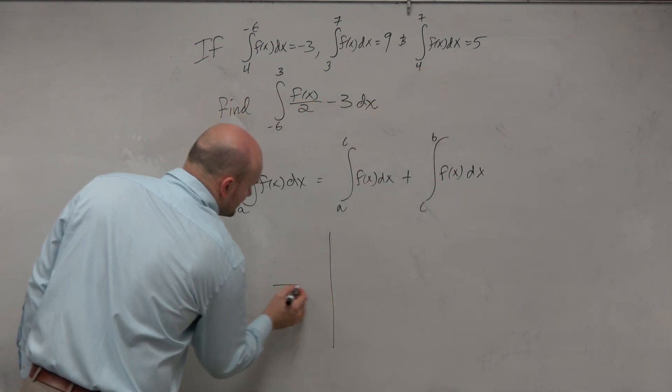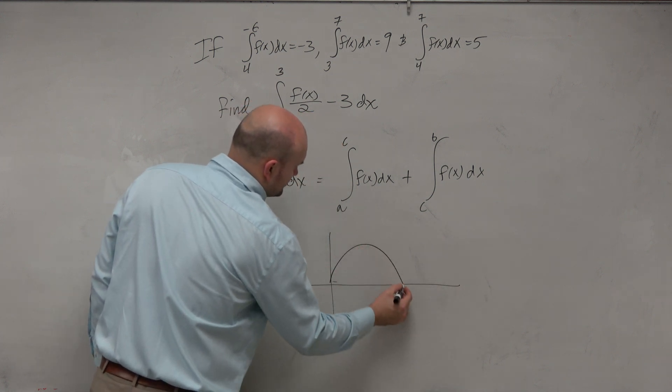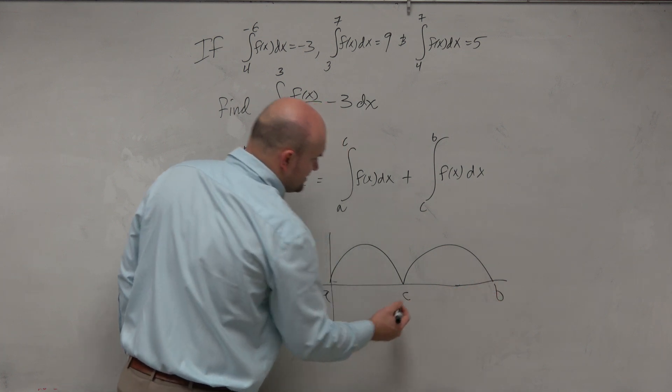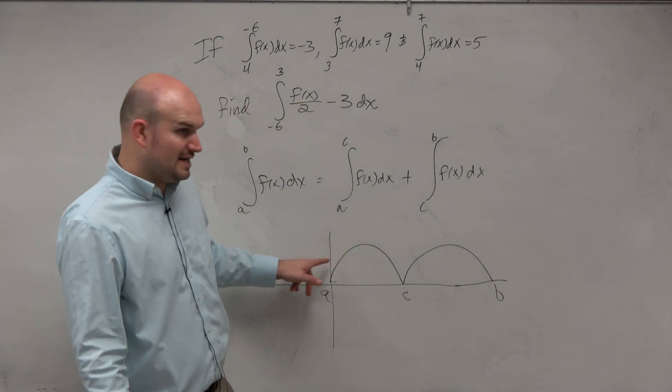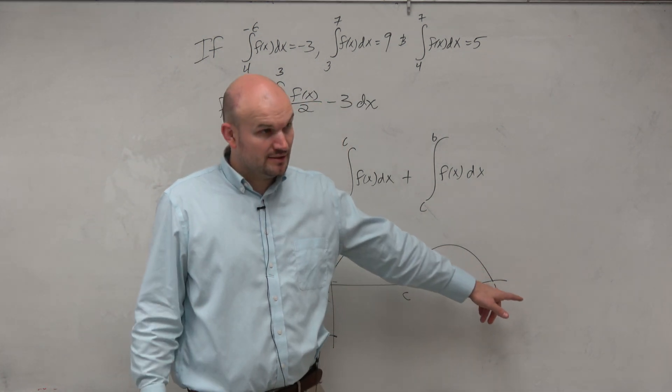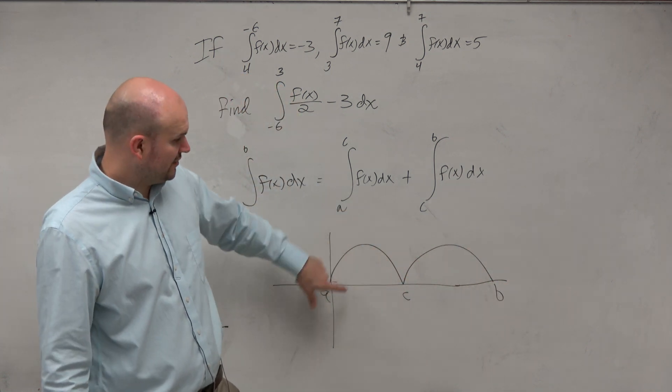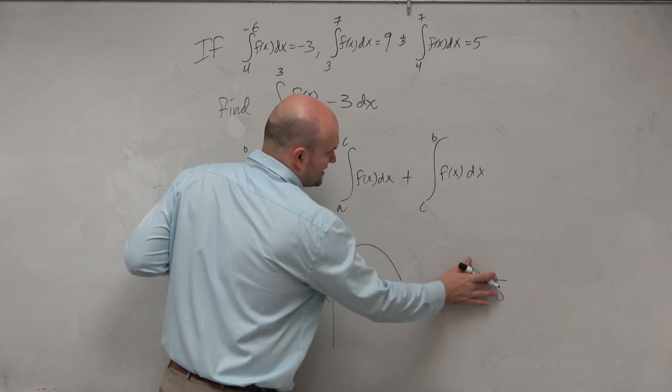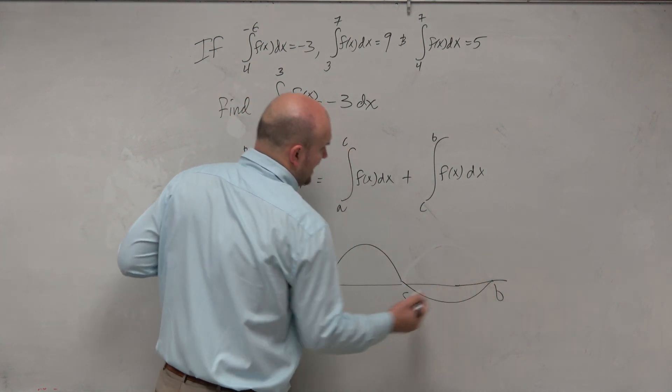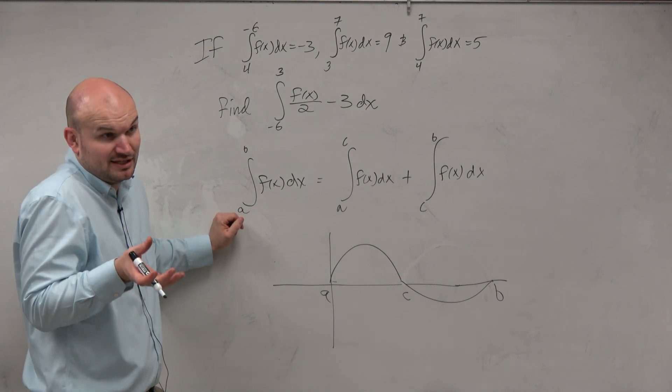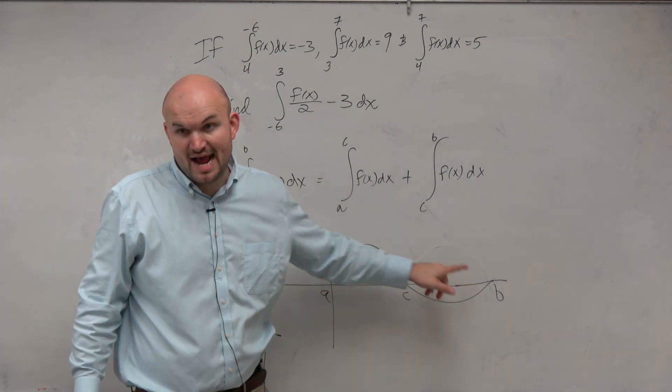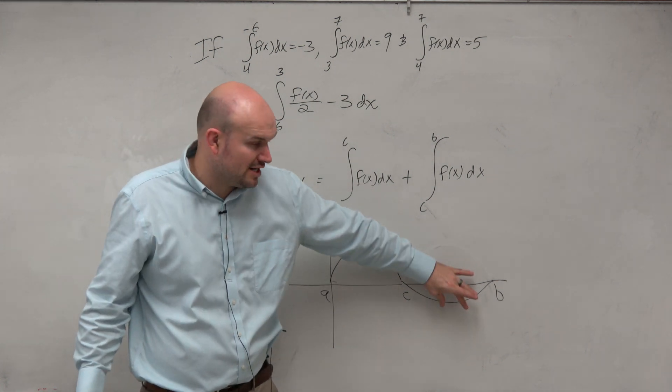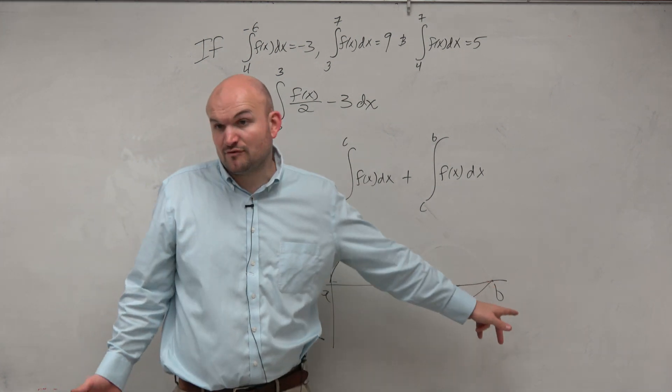If we're talking about the area, and we have different areas as far as negative and positive, we could break up from a to b with c. So we could break this up from a to c of f of x dx plus c to b of f of x dx. It could look something like this.